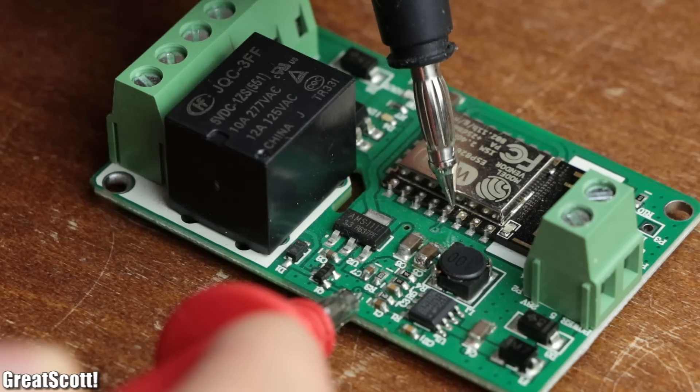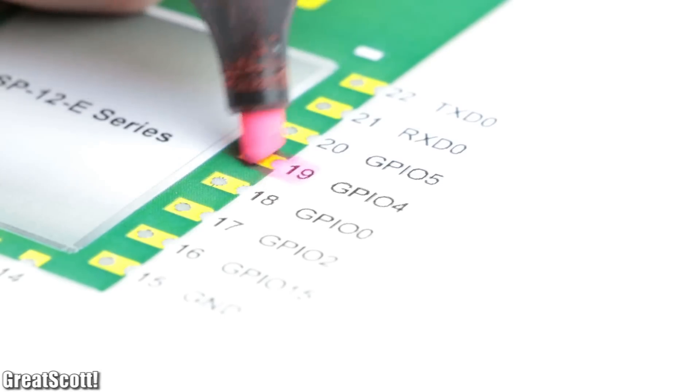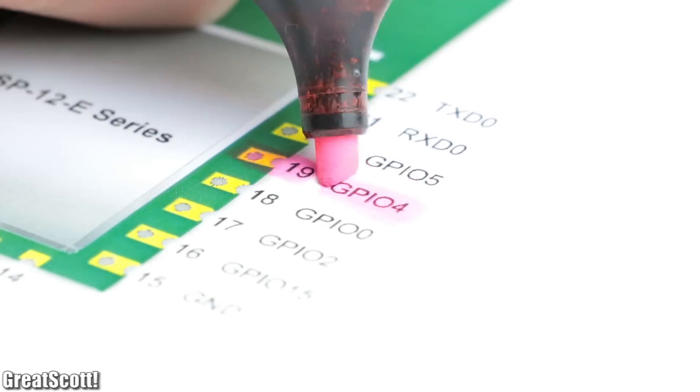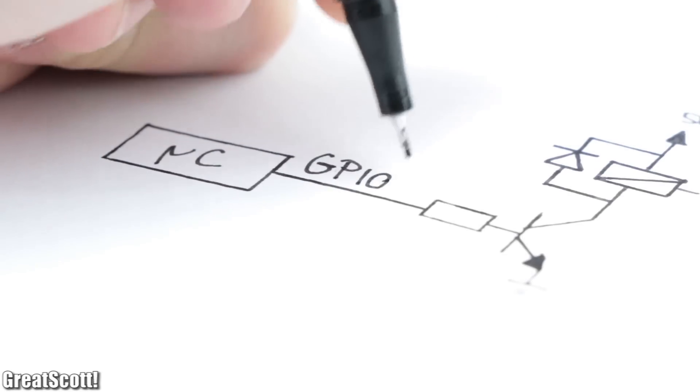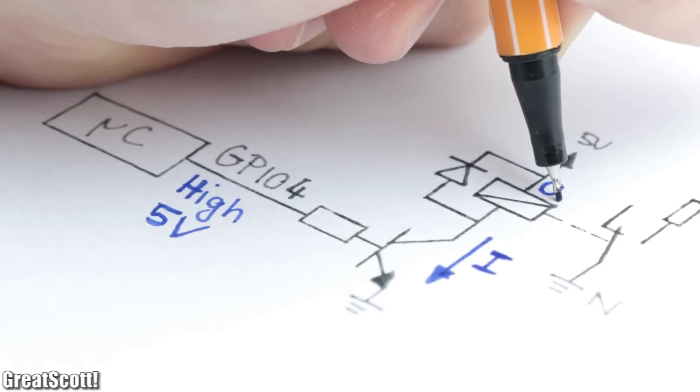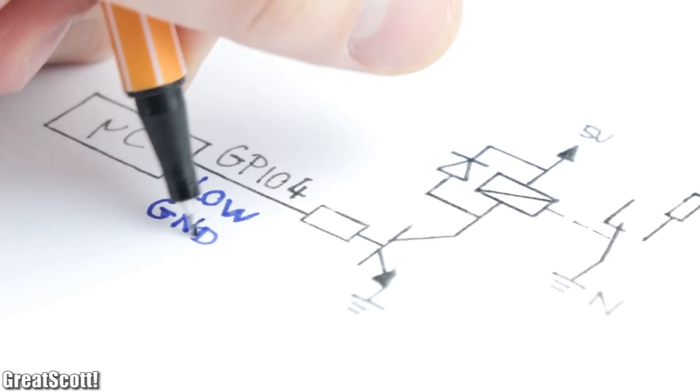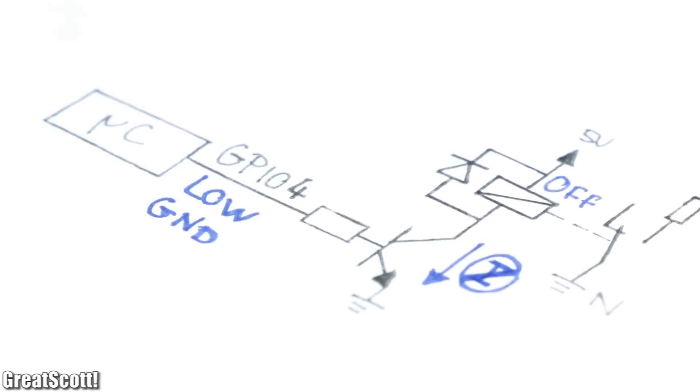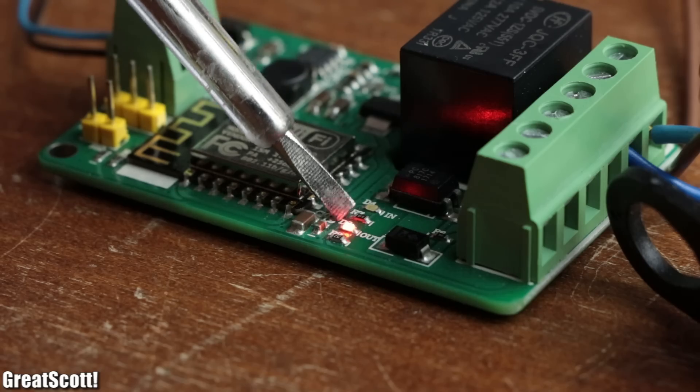For our application though, we only need to know that GPIO pin 4 of the ESP8266 is connected to the base of the relay transistor, which means by pulling it high it activates the relay and by pulling it low it deactivates the relay, which is also indicated by an onboard LED.